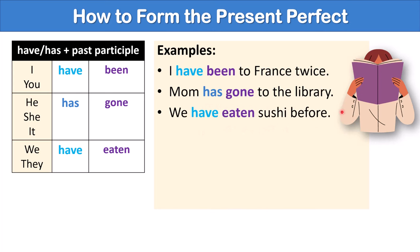All of these examples have irregular past participles. We don't say mom has went to the library. Went is in the past simple. But in the present perfect, we use has or have plus the past participle. And the past participle of go is gone. Go went gone. Eat ate eaten.